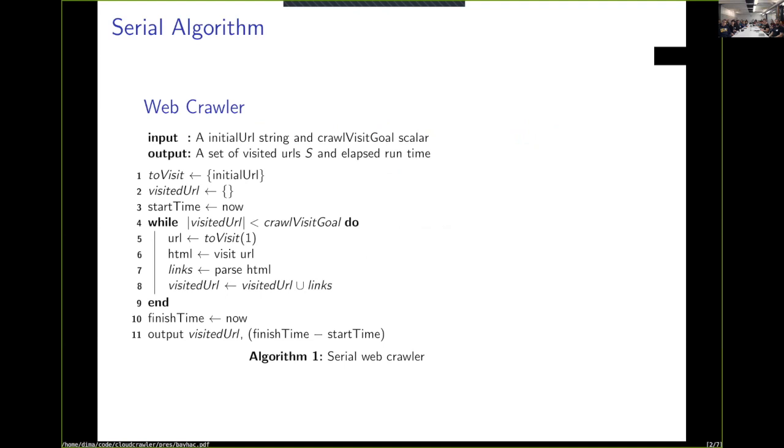and that would be the first page that we visited. And then there's also a number of pages that we need to visit before we can terminate this program. The output of this would be a set of visited URLs and a little runtime for this. I initialize things,